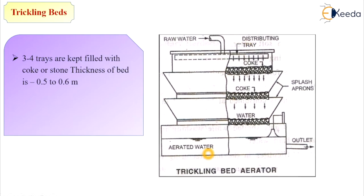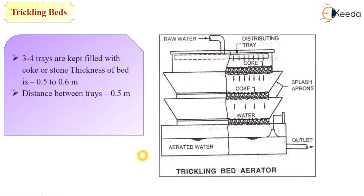Aerated water is collected from the outlet, and the biological sludge formation is removed by drains. The system consists of 3 to 4 trays filled with fog, stone, or filter media, with a bed thickness of approximately 0.5 to 0.6 meters. The distance between trays is 0.5 meters and water is sprayed from a distribution pipe at the top.